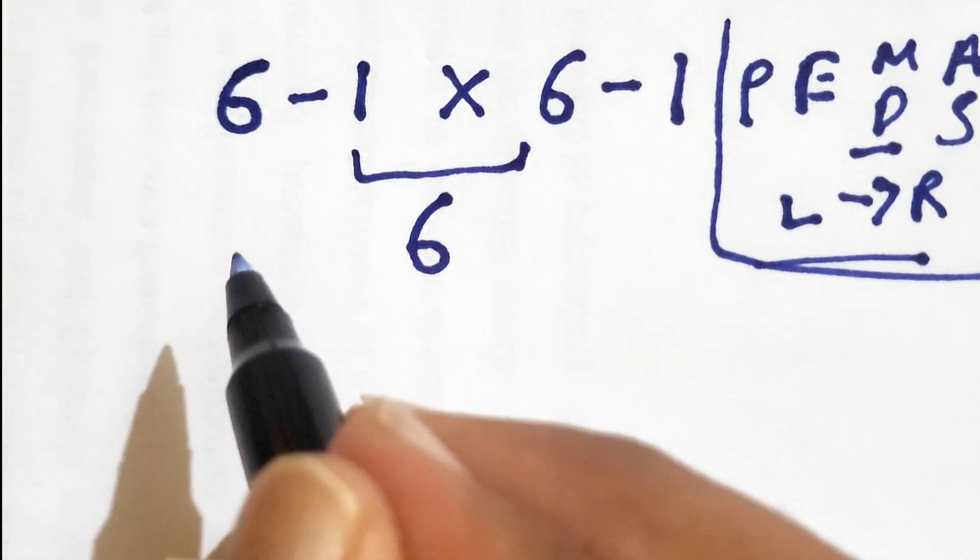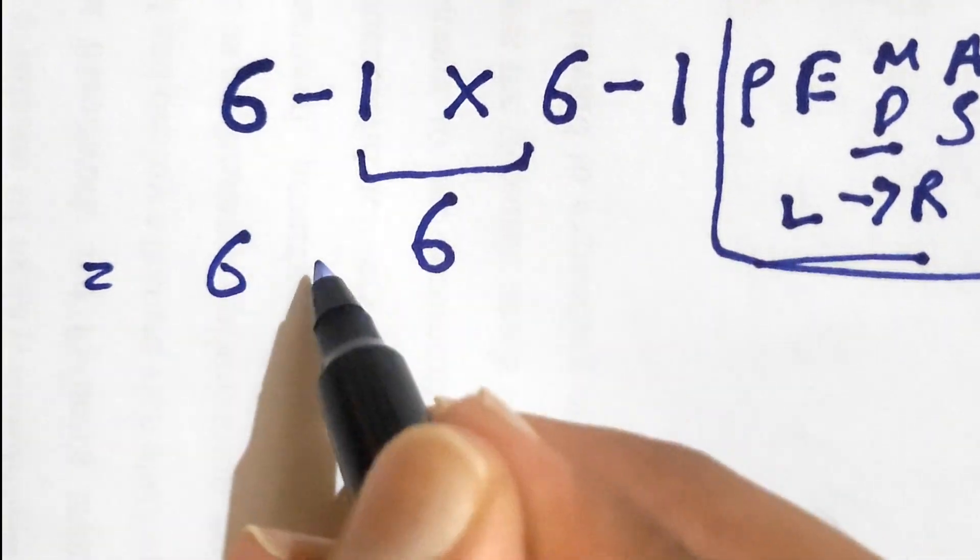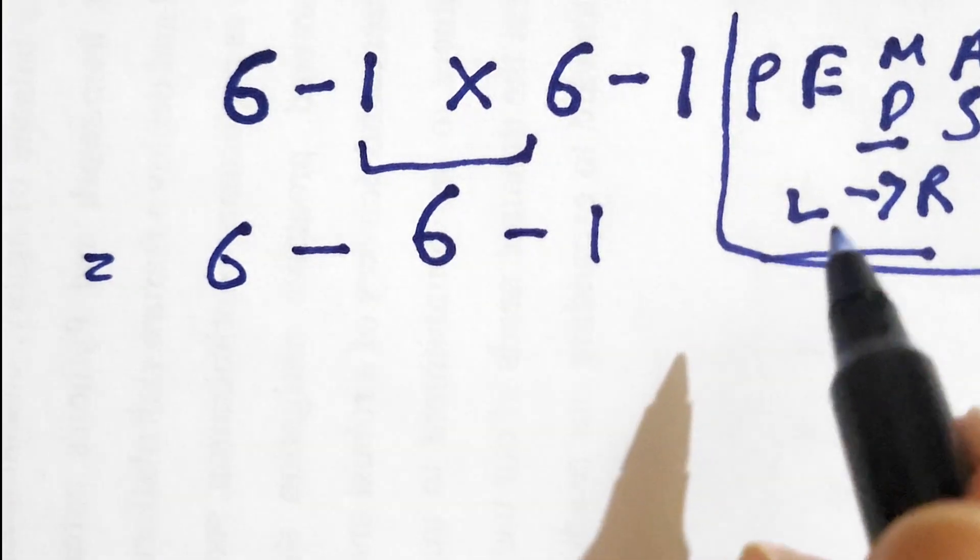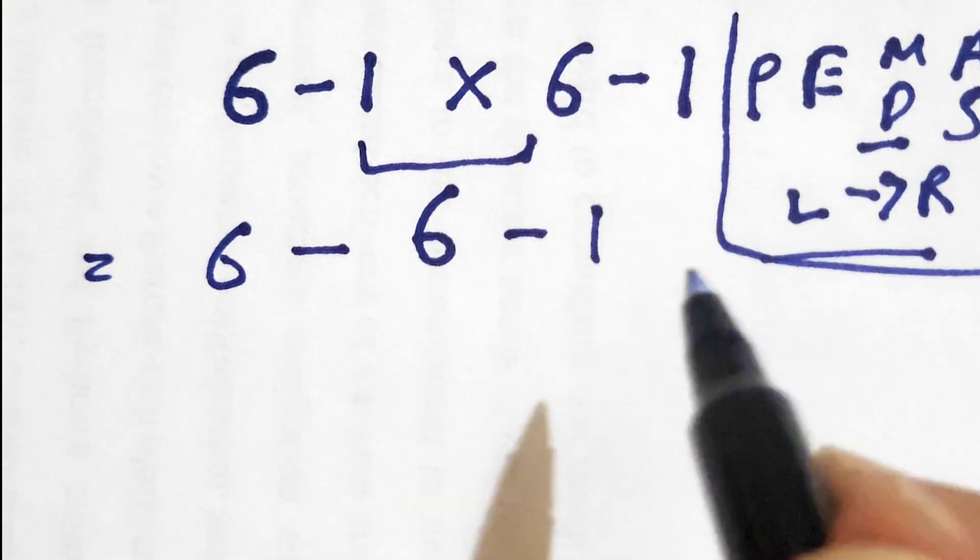So we have 6 minus 6 minus 1. As we have discussed, we need to go from left side towards the right side.